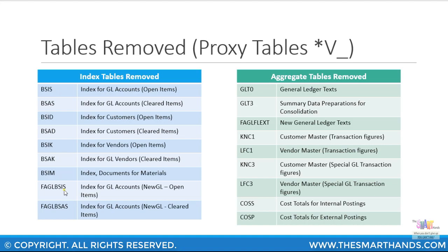All of these will no longer be necessary in S/4HANA because they will all be available in the universal journal table ACDOCA. For planning you can have the table ACDOCP, and for certain totals there is also another table called ACDOCT that will replace most of the totals tables — also called aggregate tables — which have also been removed, such as CUSS, CUSP, and so on.